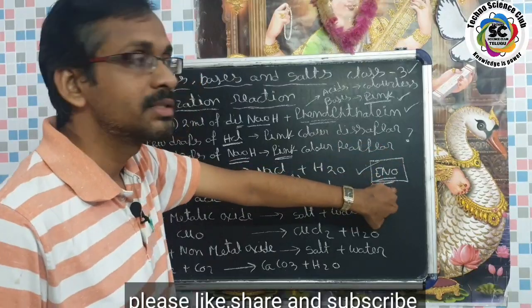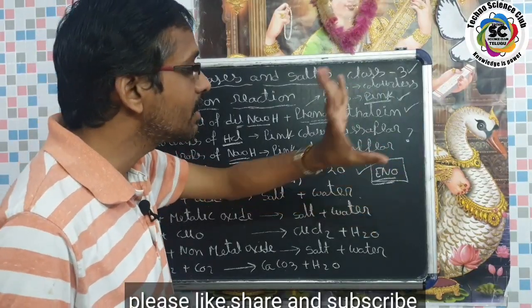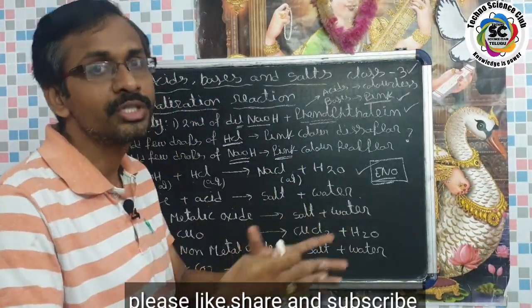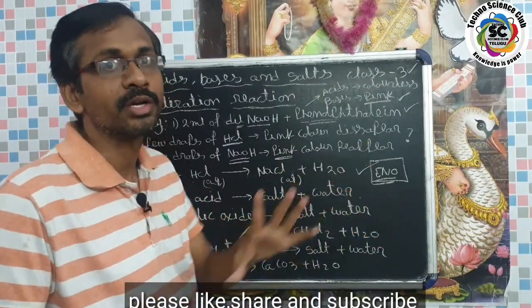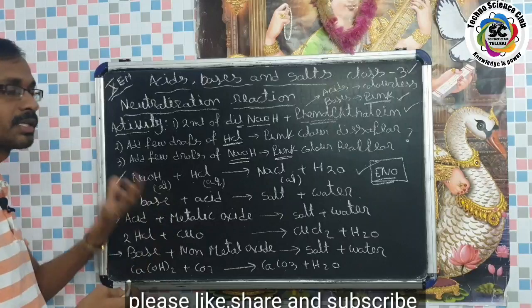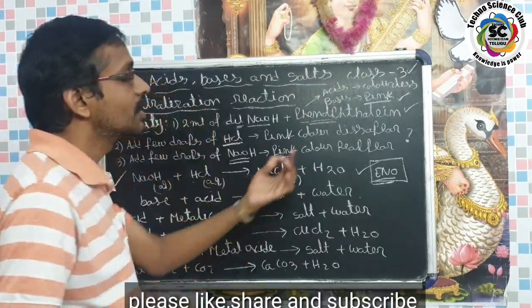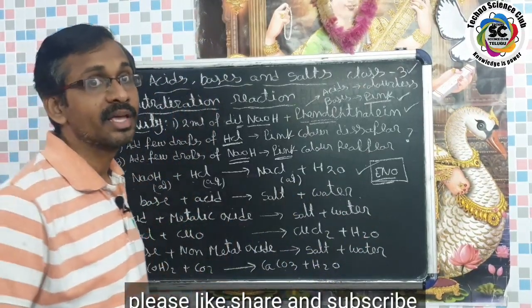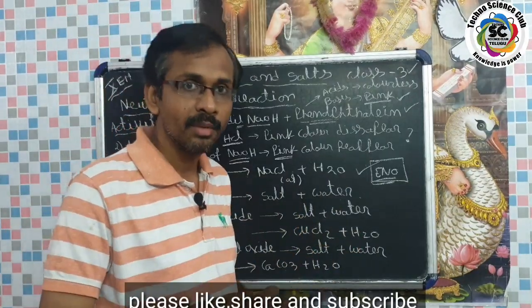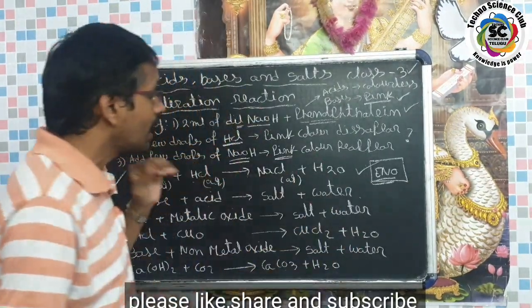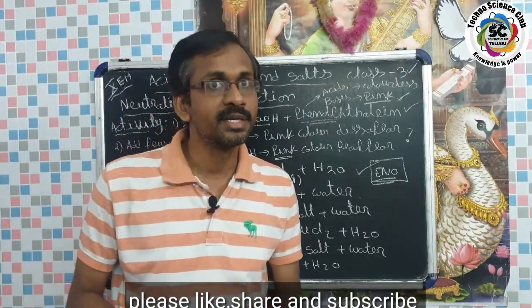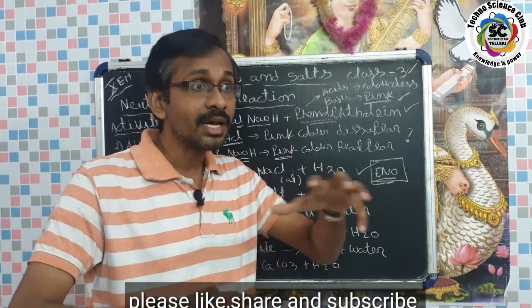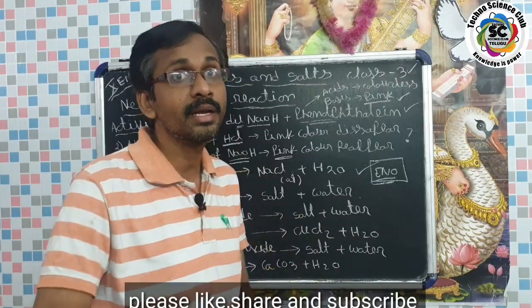What does Eno contain? Eno contains a basic powder or basic solution. When this basic solution is added to water and taken, it neutralizes the excess acids already present in the stomach. So the basic solution neutralizes the acid, relieving the acidity problem. This is how antacid tablets and chemical tablets help with digestion and acidity.